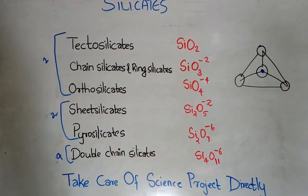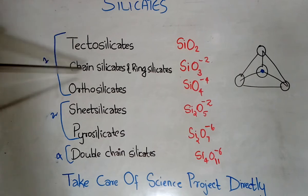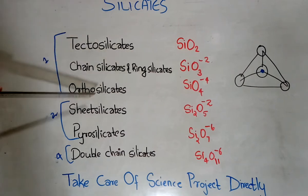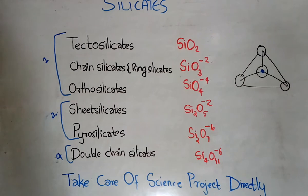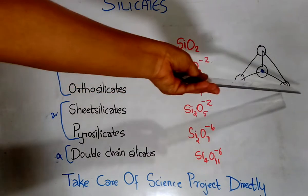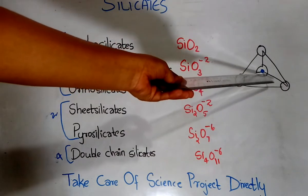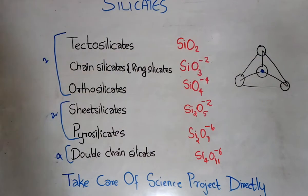This is a simple chart and I am going to give you a trick to remember this as well. The types of silicates are: tectosilicates, chain silicates, ring silicates, orthosilicates, sheet silicates, pyrosilicates, and double chain silicates. As you can see, the circles represent oxygen and the small blue mark represents silicon.